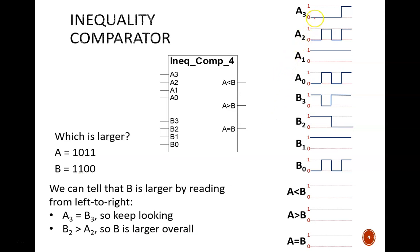In the first time slot, B3 is greater than A3. Therefore, B is the larger number overall. Thus, we make that signal high, and leave the others low.